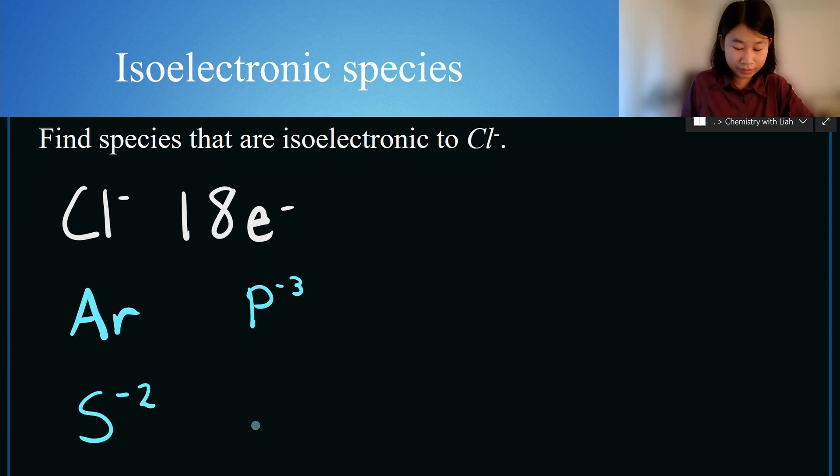For silicon here, this already has 14 electrons, but if we add four more, this would become a negative 4 charge. We would also have 18 electrons here.